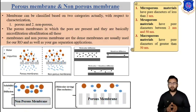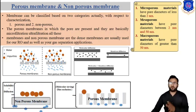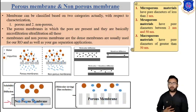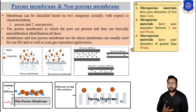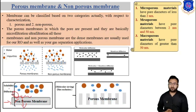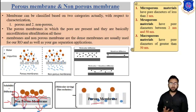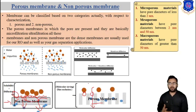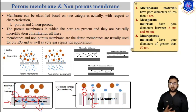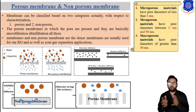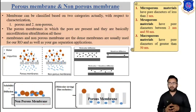To recap: in non-porous membranes there are no pores; transport of molecules is done by solution-diffusion, where solute molecules adsorb on the surface and transfer through the matrix to the permeate side. In porous membranes, there are distinct pores — smaller molecules pass through while larger molecules are rejected. Non-porous membranes are used in reverse osmosis or nanofiltration, while porous membranes are used in ultrafiltration and microfiltration.